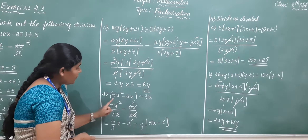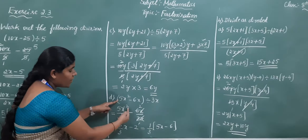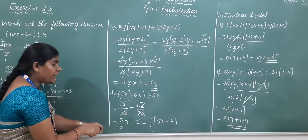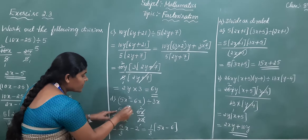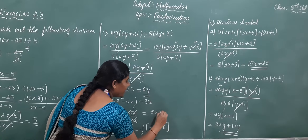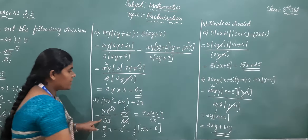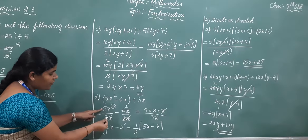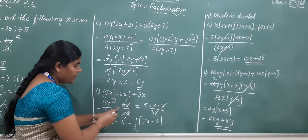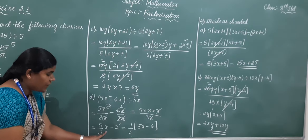Moving on to the next problem: 5x squared minus 6x divided by 3x. Split the terms: 5x squared divided by 3x, minus 6x divided by 3x. For x squared, the rising power means x multiplied twice, so write 5 into x into x divided by 3 into x. One x cancels, leaving 5 by 3 into x. For the second term, using the 3 table: 3 twos are 6, and x cancels with x. Remaining term is minus 2. So the expression becomes 5x/3 minus 2.